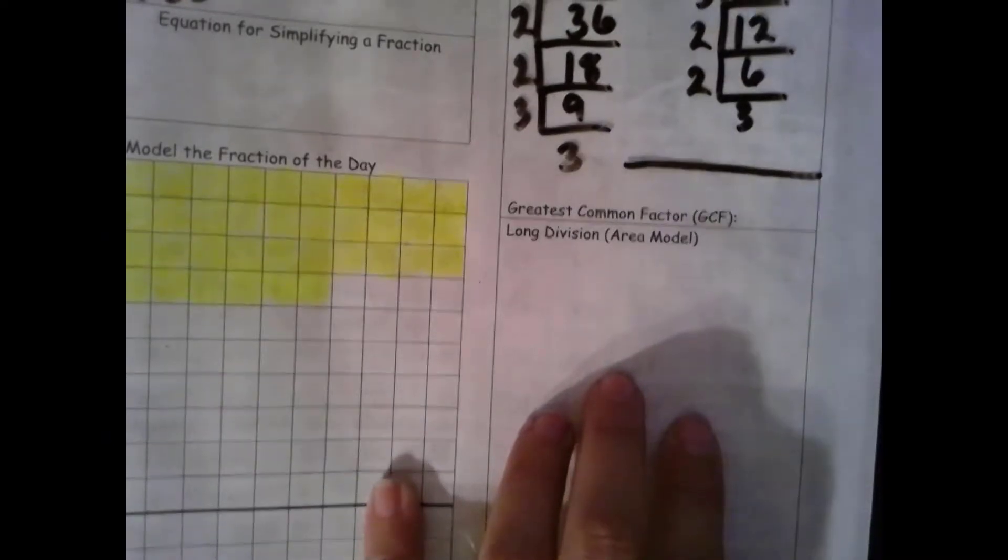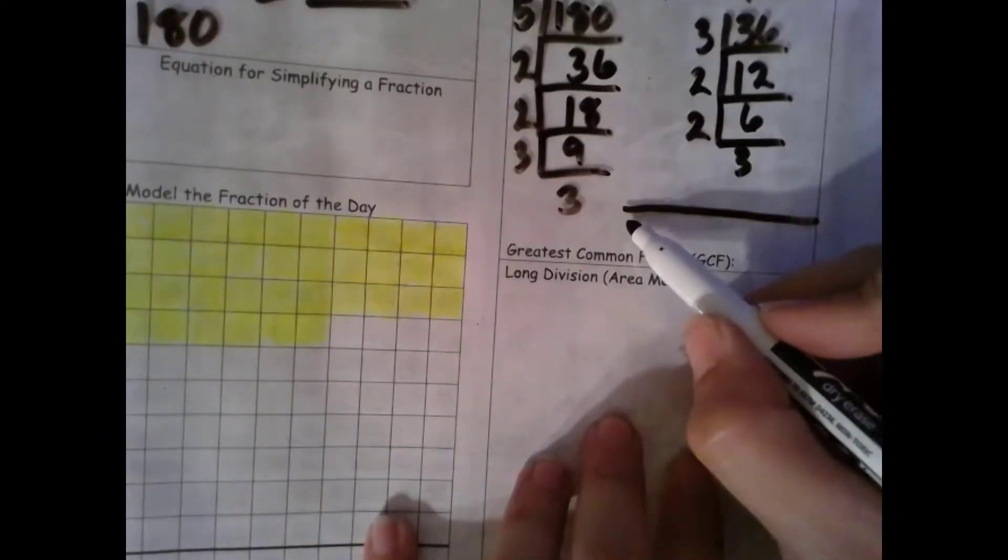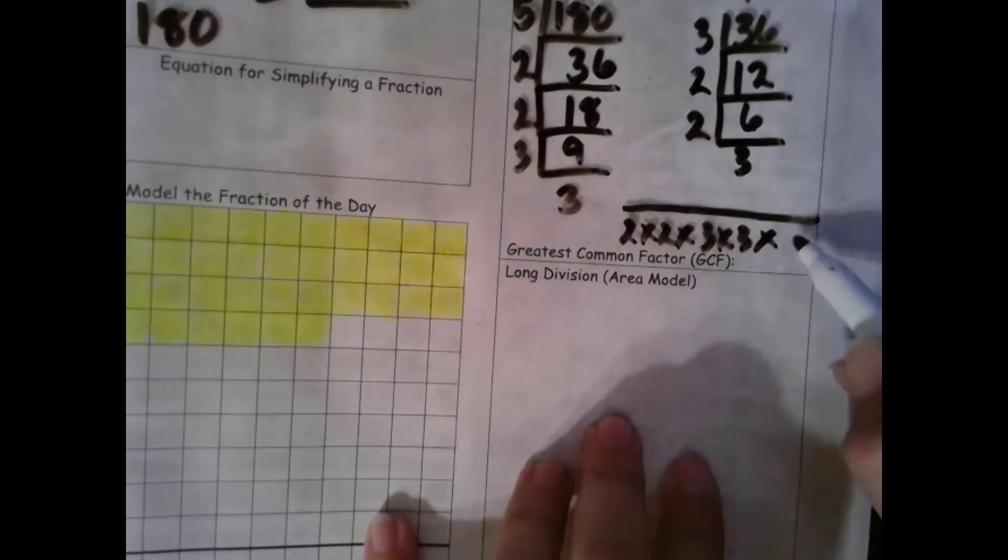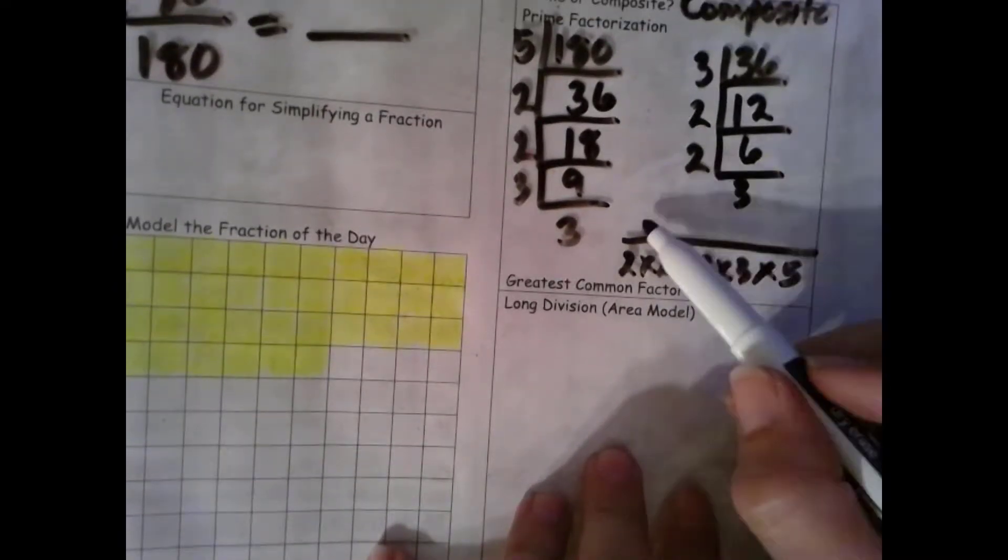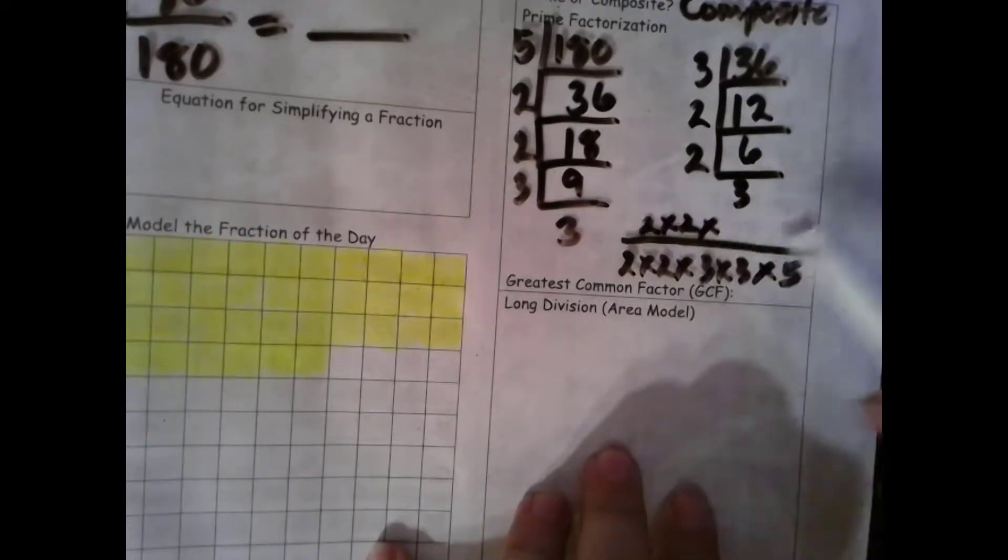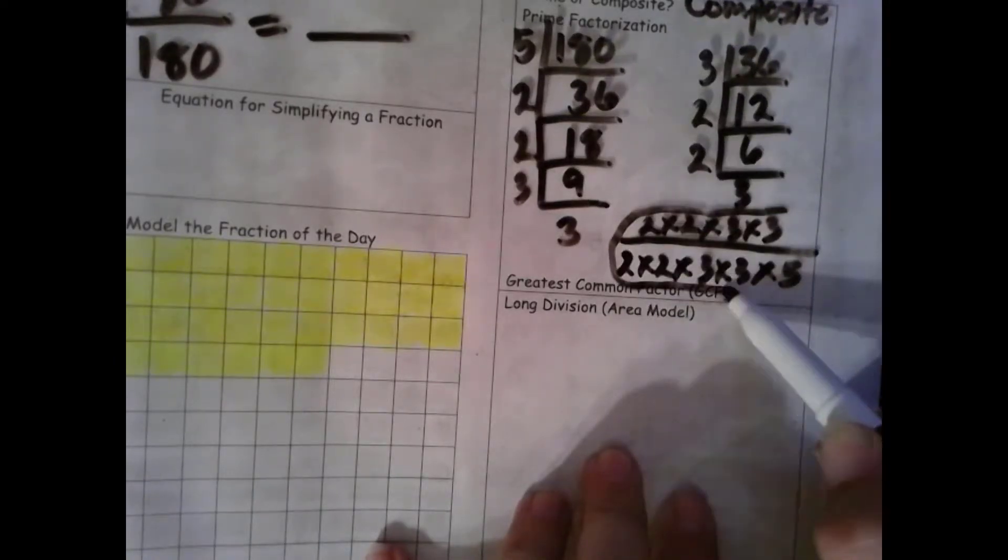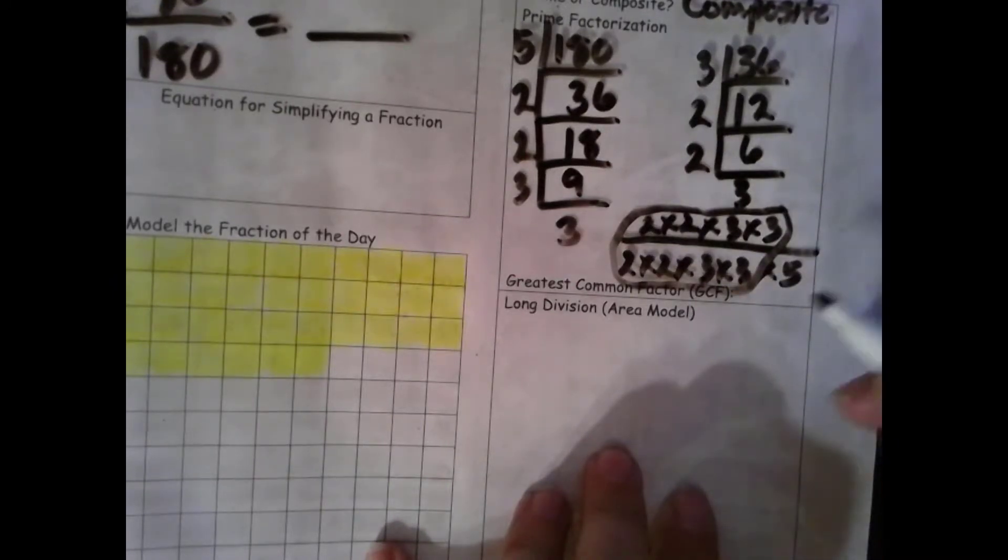Now it's time to write our prime factorization for our numerator and denominator. Our denominator, 2 times 2 times 3 times 3 times 5. And our numerator is 2 times 2 times 3 times 3. So what do we have in common? We have a lot in common. 2 times 2 times 3 times 3. So that looks like 36 is our greatest common factor, because all the prime factorization for 36 is common. So that leaves 1 in the numerator and 5 in the denominator, 1 fifth.